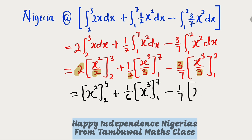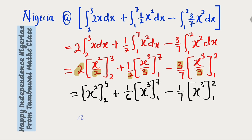Inside we have x to the third power from 1 to 2. Let's further simplify — we are going to substitute x with their corresponding bounds. So from the left hand side, instead of x we replace it by 3: we have 3 raised to the power of 2, then minus the lower bound, 2 raised to the power of 2.